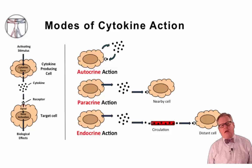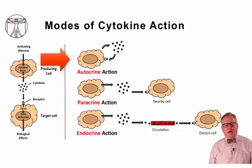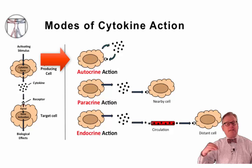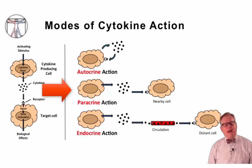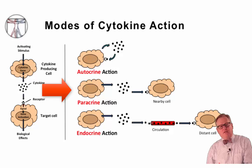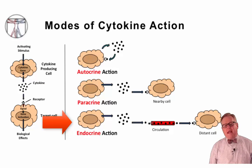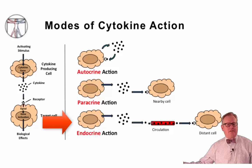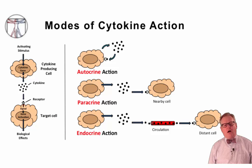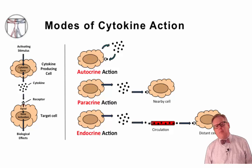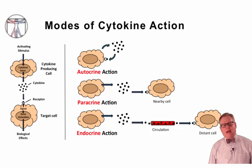The three modes of action of cytokines are: number one, autocrine — where a cell gets activated, it secretes a cytokine, and that cytokine feeds back on the same cell to stimulate itself. The second mode is paracrine action, where an activated cell makes cytokine that goes out and activates a nearby cell. The third mode is endocrine action, where the activated cell makes cytokine that gets secreted into the circulation and may activate a cell far away. These three modes — autocrine, paracrine, and endocrine — are all utilized by immune cells as they secrete cytokines and chemokines to increase or change their function.